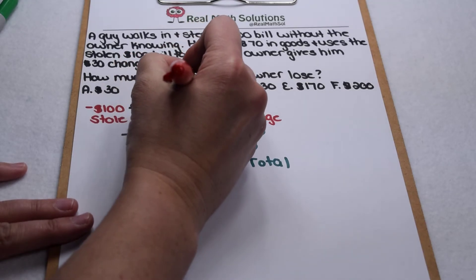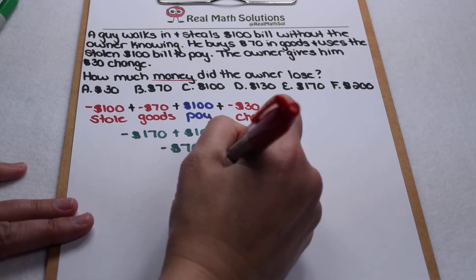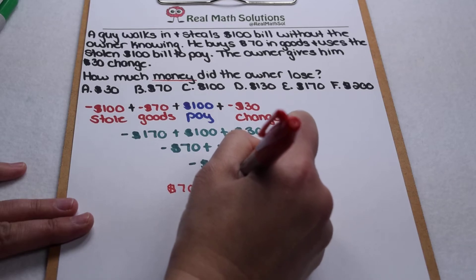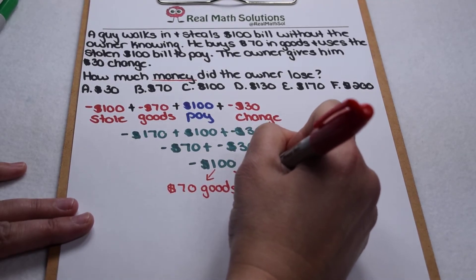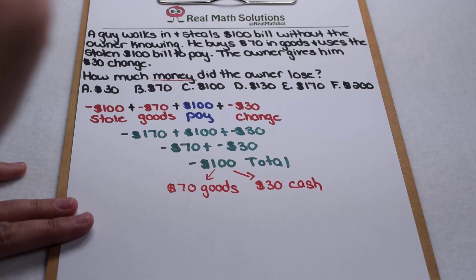It specifically says how much money did the owner lose? Well, $70 is in goods, not cash. And then the other $30 is in cash because that came from the change.